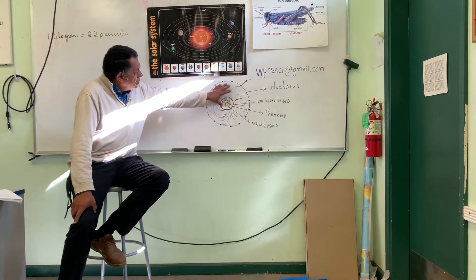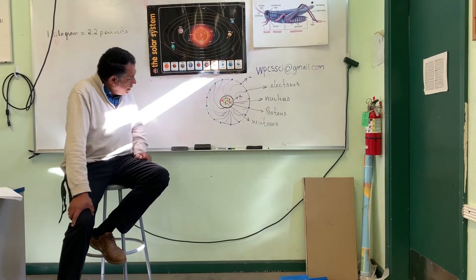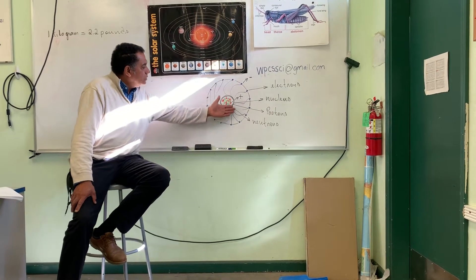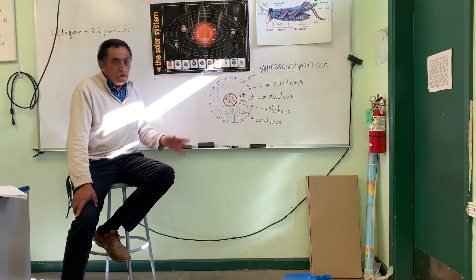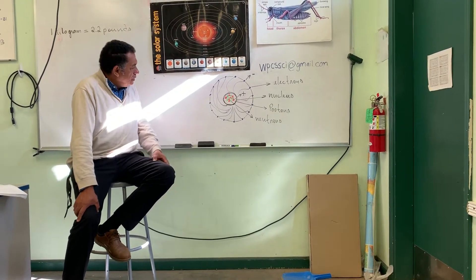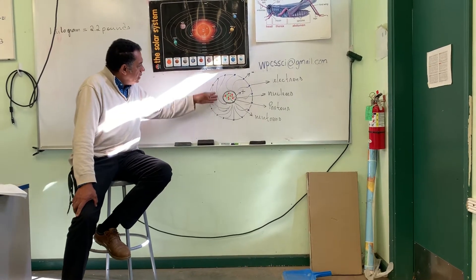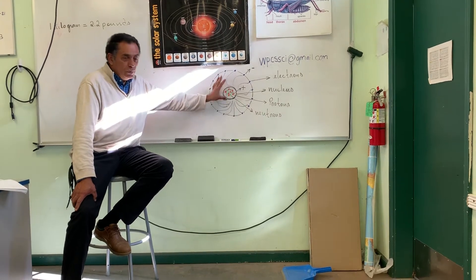Around that you have electrons, and these electrons are negative. But these electrons don't go around the nucleus as the planets go around the sun. They have no orbit around. They go everywhere just to protect the nucleus.